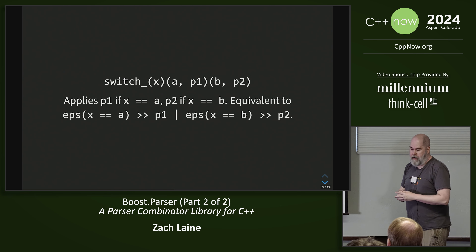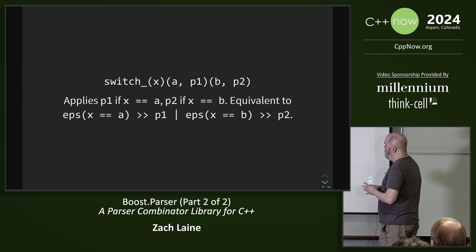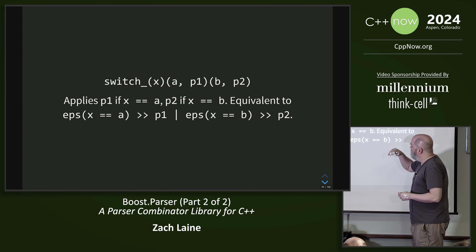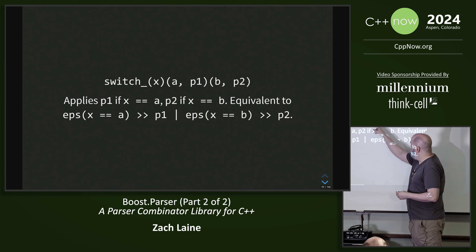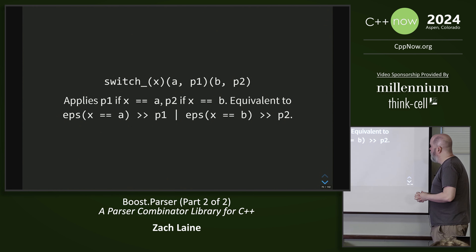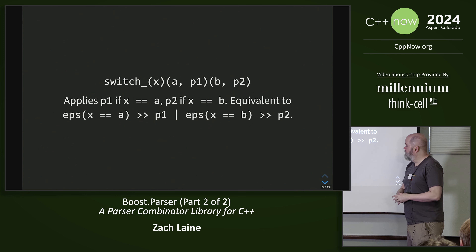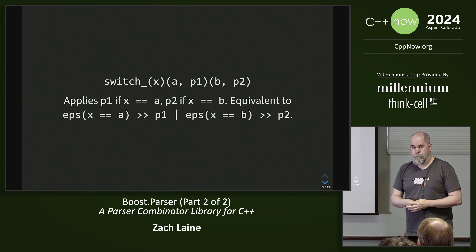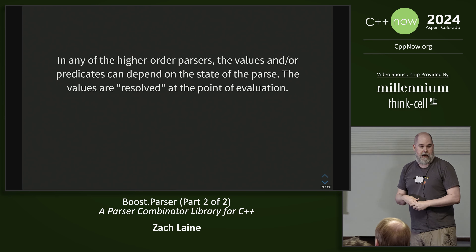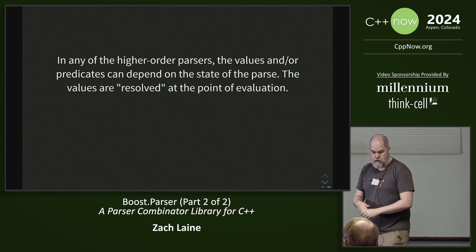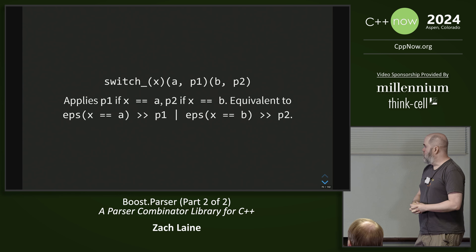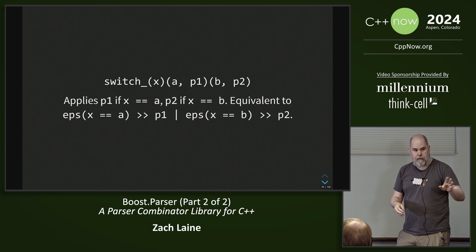You can have a switch parser. What this does is it evaluates this argument, and then if it's equal to a it parses using p1, if it's equal to b it parses using p2; otherwise the whole parse fails. So it's equivalent to the if-else form. All of those arguments — x, a, and b — are each individually evaluated in the same way: if it's just a value or expression I can see the value of, that's fine; if it's a callable that takes a context, then I use that instead.